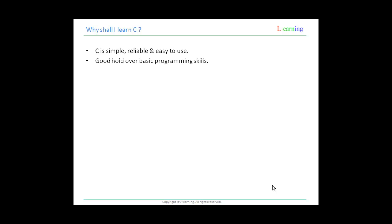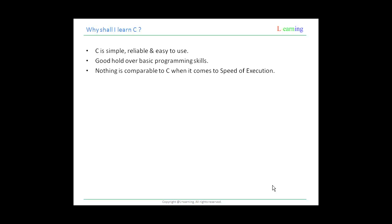You may ask: when there are languages like Java and Microsoft .NET which are object-oriented, why should I still learn C? Because C is the language which can teach you basic programming skills effectively. If you directly jump into object-oriented programming, a newcomer will be puzzled and end up nowhere. If you learn C first, you will get a good grasp on all the basic elements of programming.